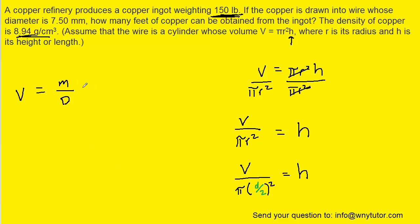So let's come in here. We'll go ahead and plug in the 150 pounds for the mass. And then we'll plug in for the density the 8.94 grams per centimeter cubed.